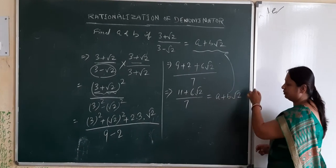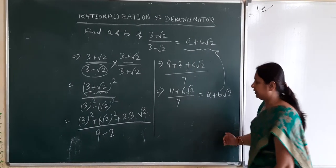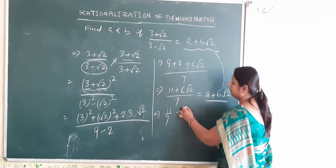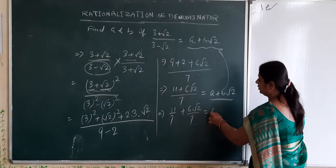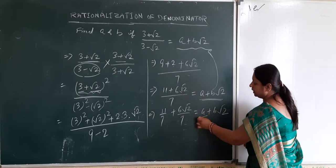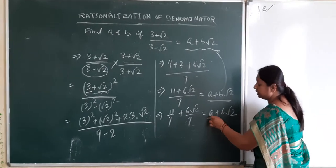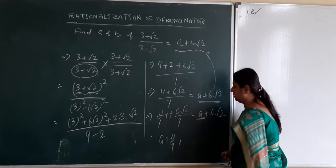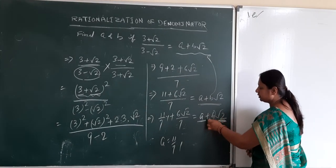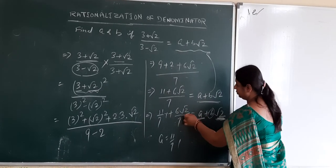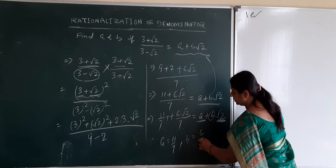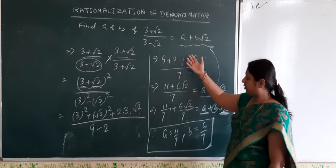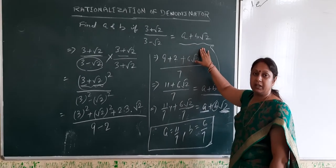We write this as 11 by 7 plus 6 root 2 by 7, which equals a plus b root 2. Now we compare coefficients. The coefficient of the rational part gives a = 11 by 7. The coefficient of root 2 gives b = 6 by 7. By applying rationalization, we can easily find the unknown variables a and b.